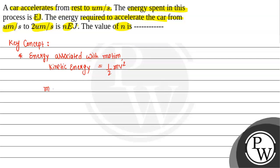Here, M is the mass of the object moving with velocity V. If we need to find the change in kinetic energy, this will be half of m times (Vf squared minus Vi squared), where Vf is the final velocity and Vi is the initial velocity. We will use this to solve the question.